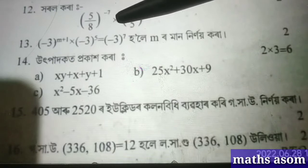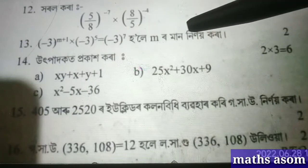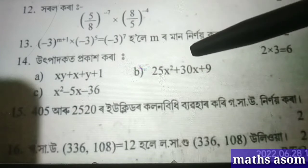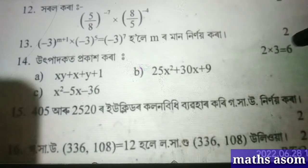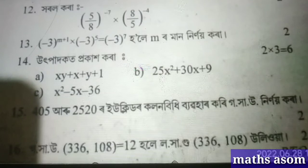3 to the power m plus 1, into minus 3 to the power 5, equals minus 3 to the power 7. Question 2 number: a) x·y plus x plus y plus 1, b) 25x squared plus 30x plus 9, c) x squared minus 5x minus 36. Also 2500 equals 2 number, and 16: 3 to the power 3 equals 3 to the power 1, 8 to the power 2.